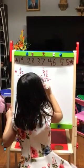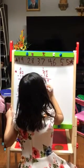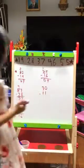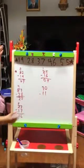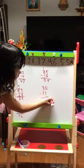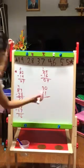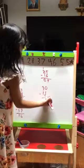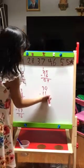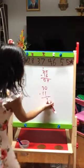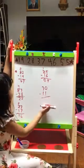The next problem is 30 minus 11. 0 can't minus 1, so we remember 1's partner.